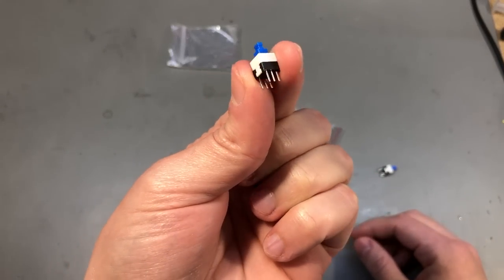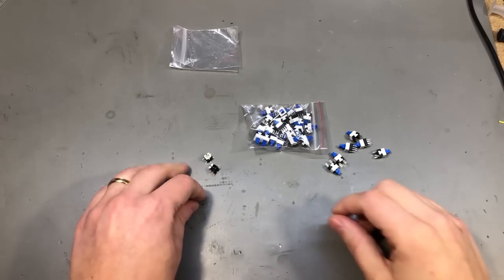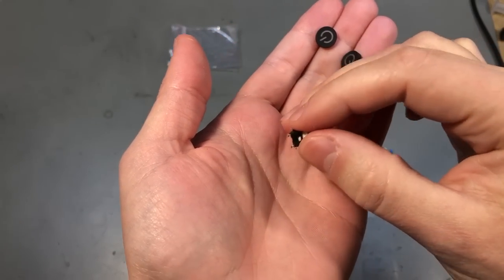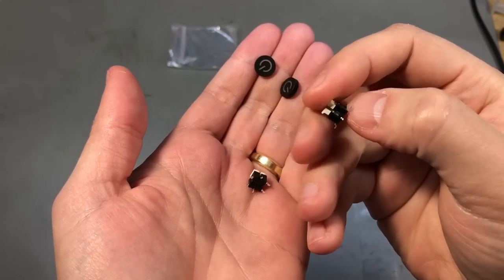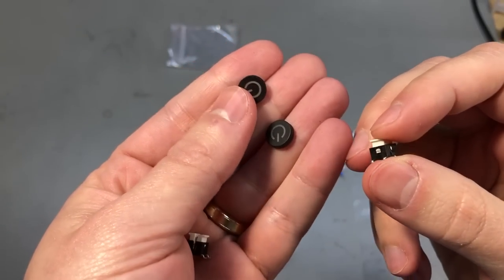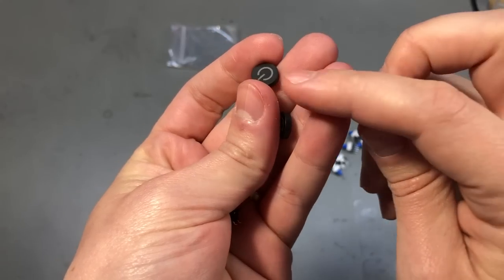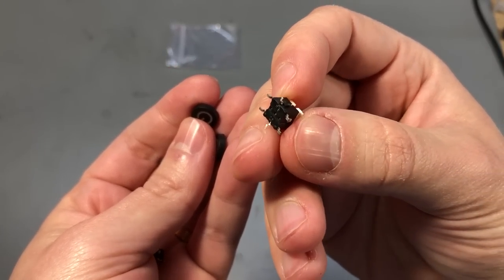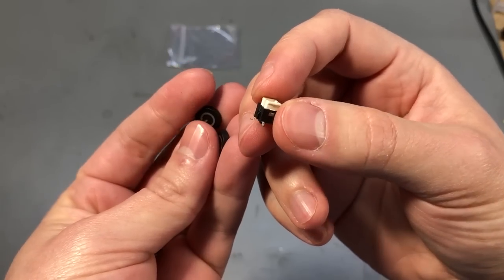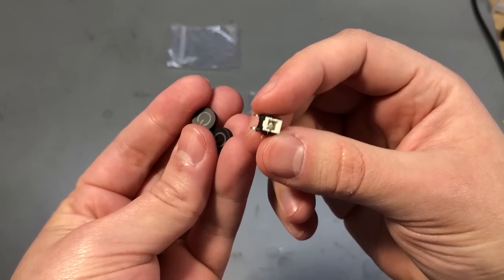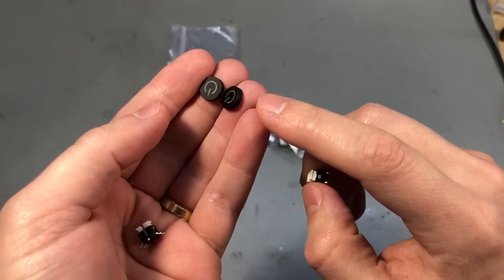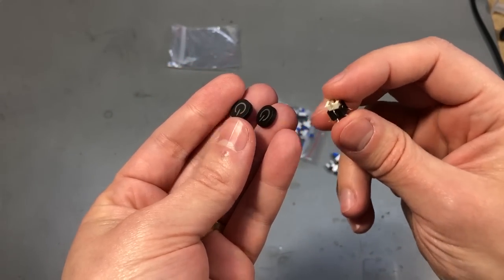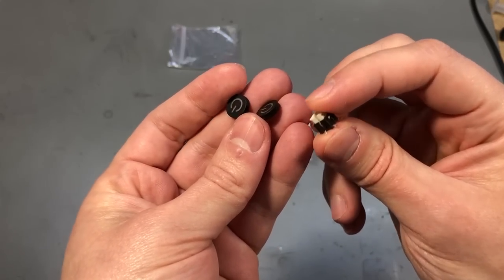The second type of switch that I have here is an illuminated tactile switch and these feature a momentary switch like most tactile switches and a built-in LED as well as an accessory which is this key cap that goes over the tactile switch. The nice thing is that these come in a surface mount package and you can order them with a bunch of different color LEDs as well as 170 different styles of keycaps with every possible icon you can imagine. So it would be pretty easy to find something suitable for the function you plan for that switch.